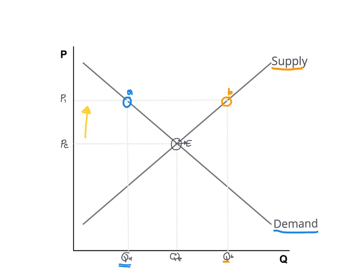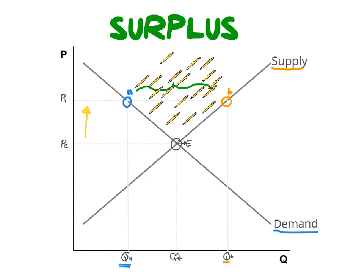The quantity supplied increased from QE to QB, but the quantity demand decreased from QE to QD. Suppliers will now supply more pencils than what is demanded by the market. This indicates a surplus or excess supply in our market.